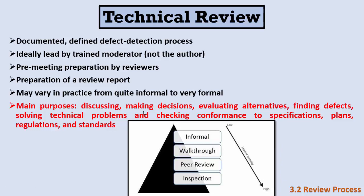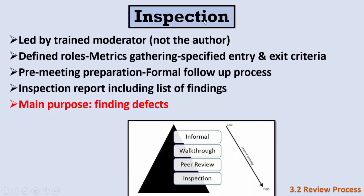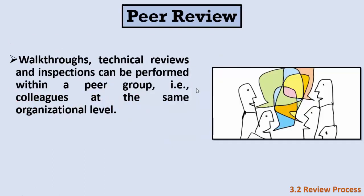The purposes of the technical review include discussing the project, making decisions, evaluating alternatives, finding defects, solving technical problems, and checking alignment with specifications, plans, regulations, and standards. The most formal type is inspection. Inspection must be led by a trained moderator who is not the author. It has defined roles, mandatory metrics, specified entry and exit criteria, required preparation, a formal follow-up process, and an inspection report with a list of findings. Its only purpose is to find defects.